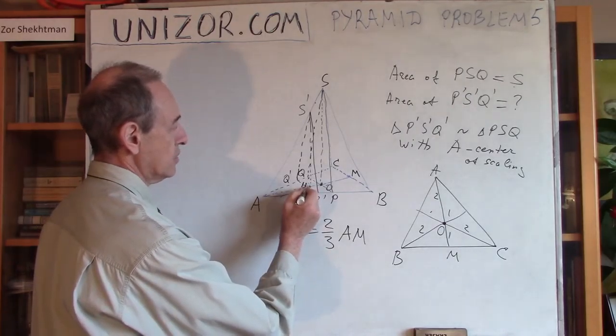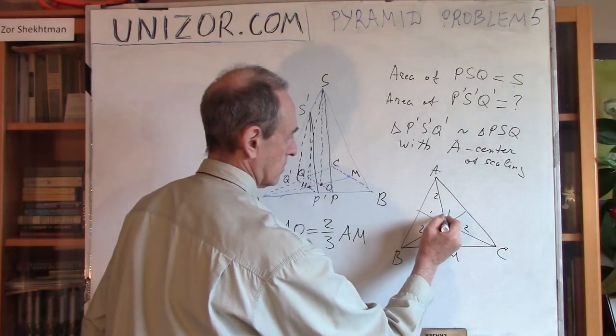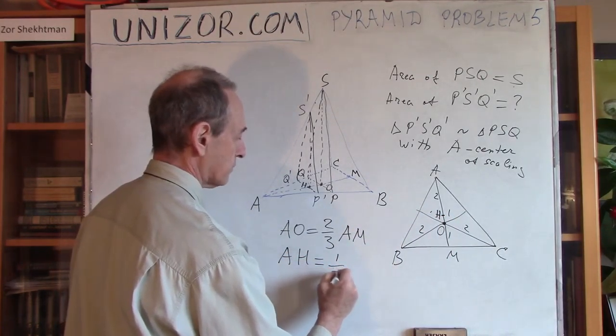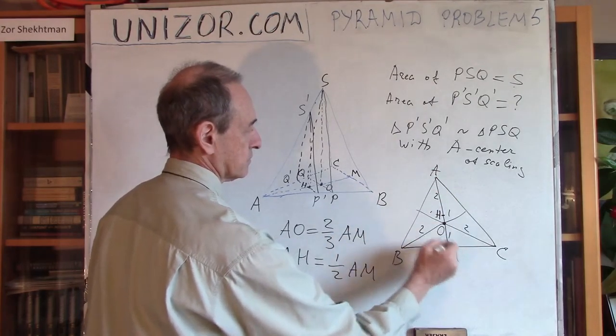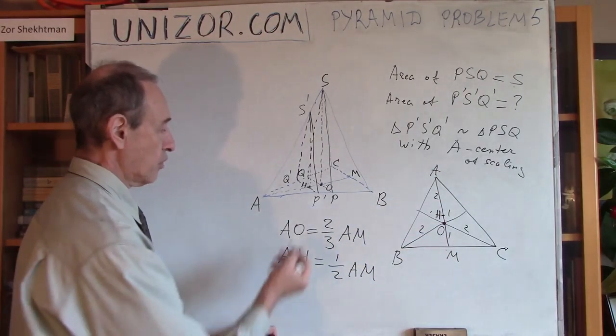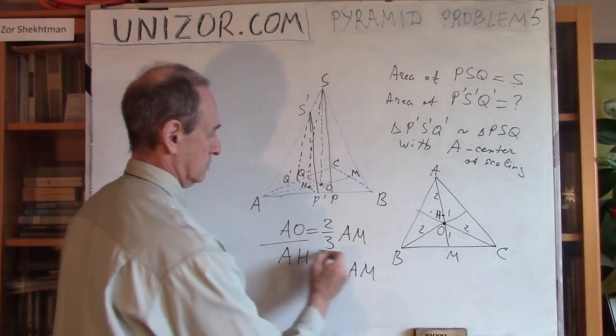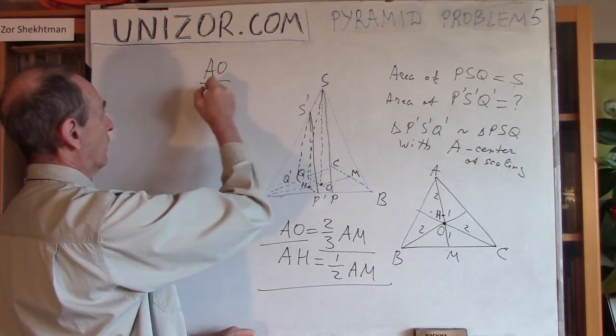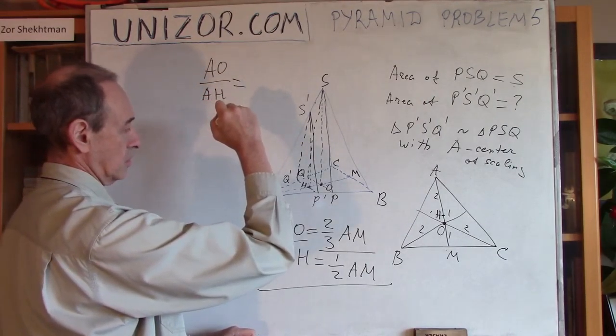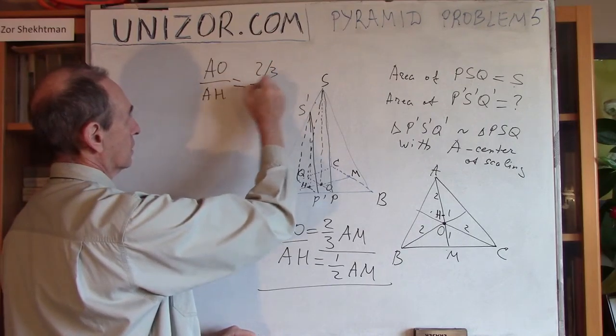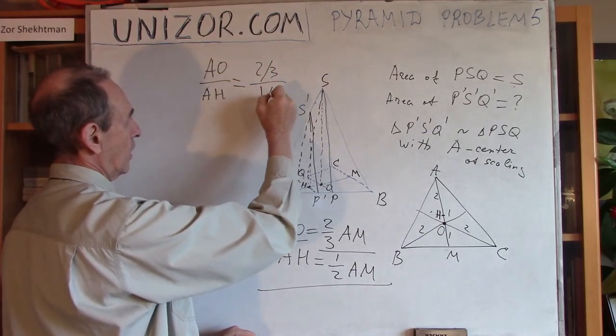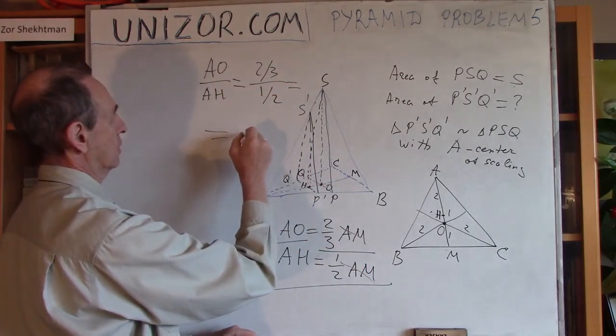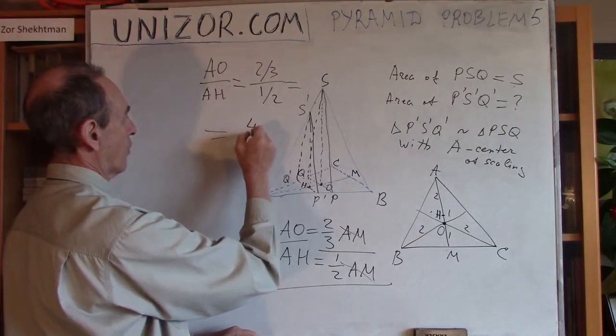Well, if you don't remember it, go to the plane geometry course and triangles. That's very well explained over there. So what I can say is that AO is equal to two-thirds of AM. Now, point H is the center of AM. Which means AH is equal to one-half of AM. So what's my ratio? AO divided by AH is equal to two-thirds divided by one-half. Because AM and AM would be reduced, which is equal to what? Four-thirds.